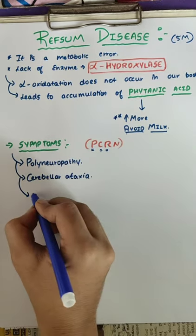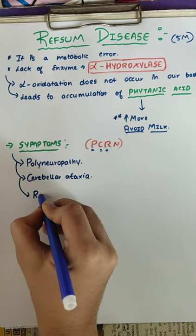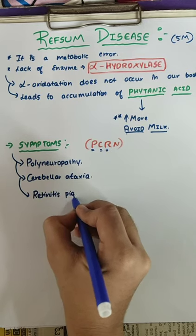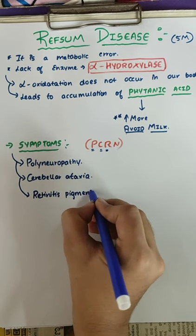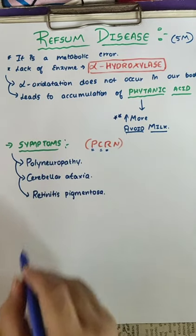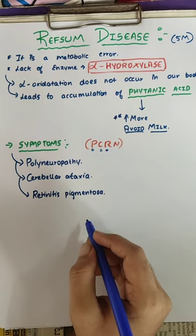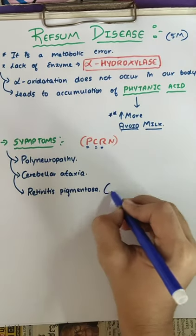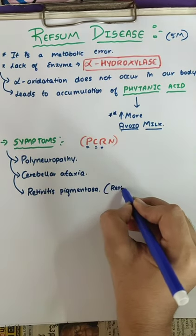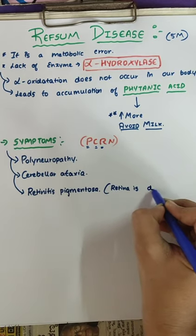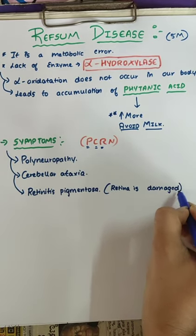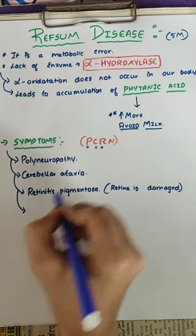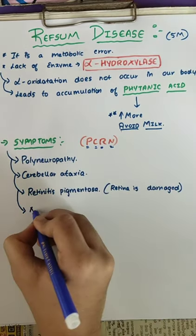Third, R is for retinitis pigmentosa. In retinitis pigmentosa there will be damage in the retina of our eye, so the retina will be damaged in Refsum disease. Last but not least, N stands for nerve deafness.